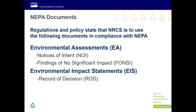NEPA documents require a significant amount of time to develop. When federal agencies plan to take some action, they must create environmental assessments, or EAs, and publicly publish a Notice of Intent, or NOI. Depending on public comments and other input, they will either be able to issue a finding of no significant impact, abbreviated as FONSI, or have to create an environmental impact statement, or EIS, with a record of decisions, or RODs. Note that the Environmental Evaluation, the EE, or NRCS CPA 52, is not listed because it is not a NEPA document — it is a planning document.